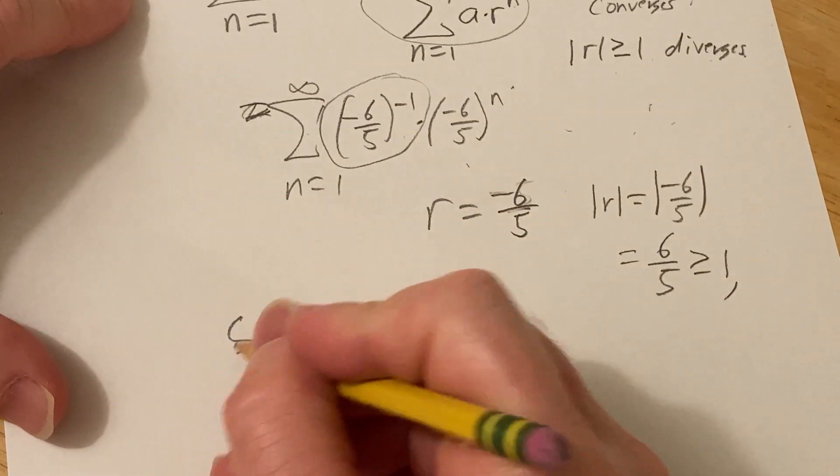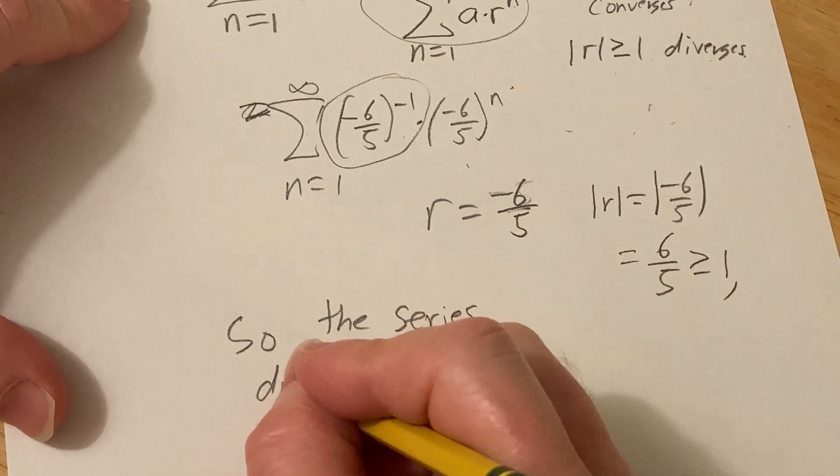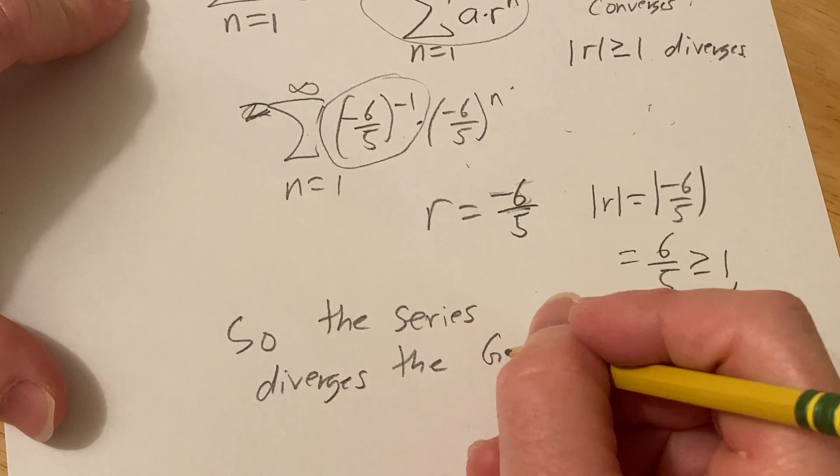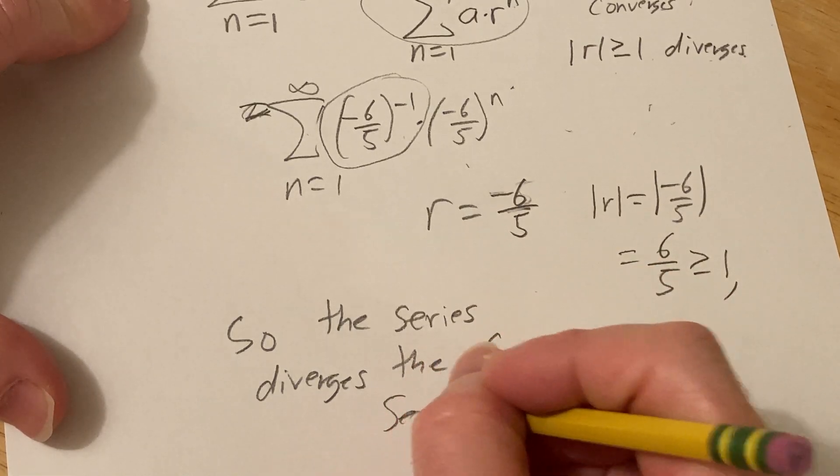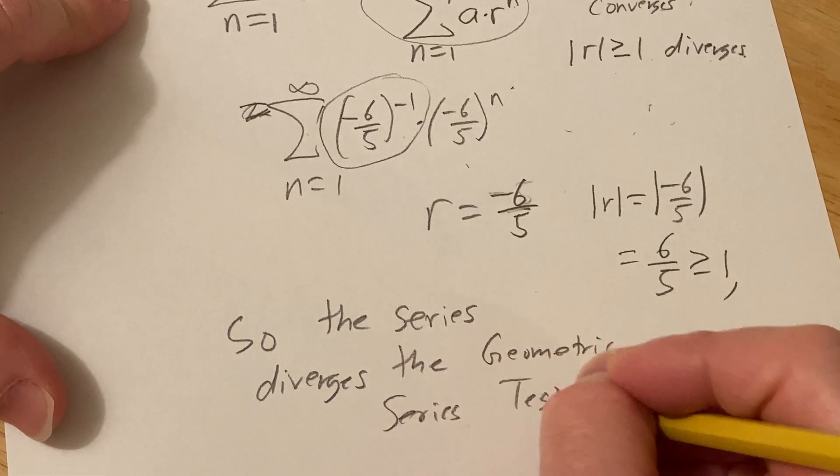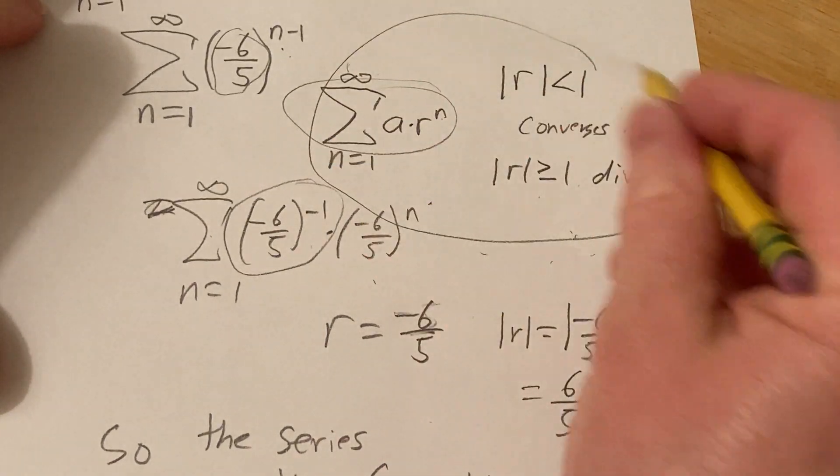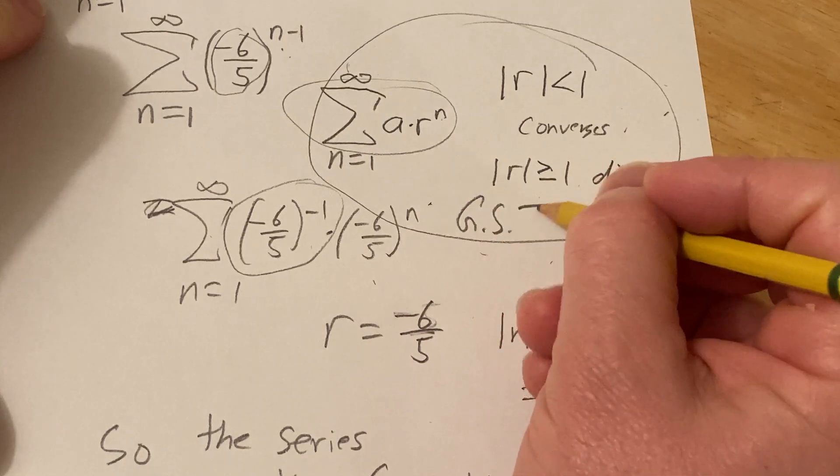So the series diverges by what's called the geometric series test. Geometric series test. That's typically what books call it. You can just say it's a divergent geometric series as well. This is the geometric series test. You can abbreviate it too if you like. You can call it GST.